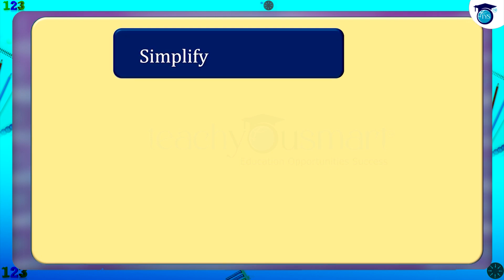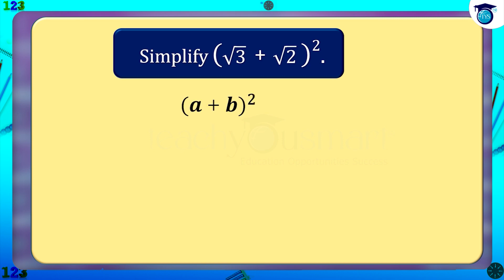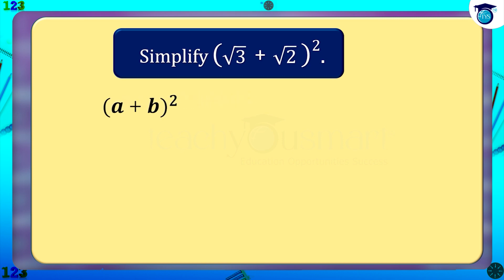Simplify (√3 + √2) the whole square. This is of the form (a+b)². We know that (a+b)² equals a² plus 2ab plus b².